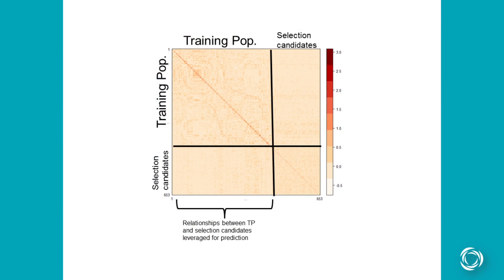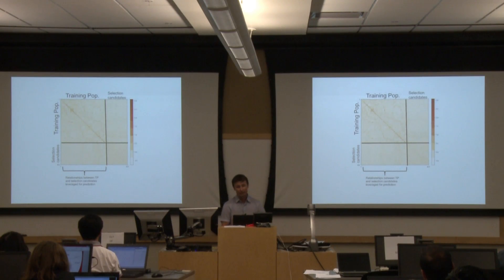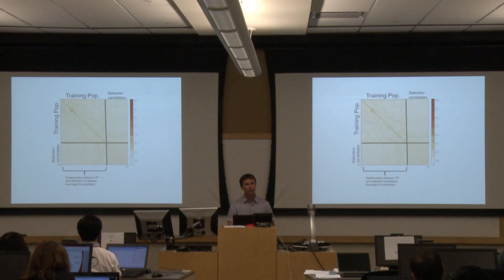The G matrix contains the realized genomic relationships between all pairs of individuals in your population, used to model the covariances. You take the relationships among all individuals in your training population, build a model, and then use the relationships between the training population and the selection candidates to make predictions — just like traditional BLUP, but now relationship information is calculated using genome-wide markers rather than pedigrees.